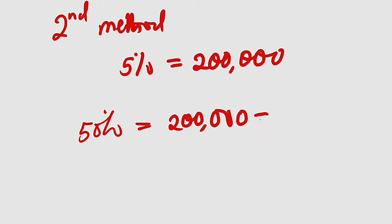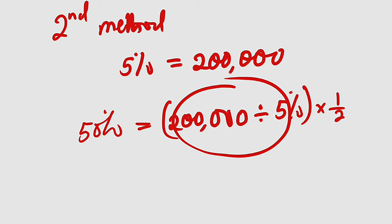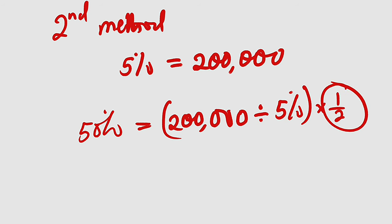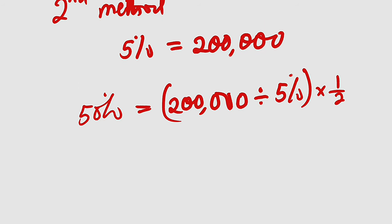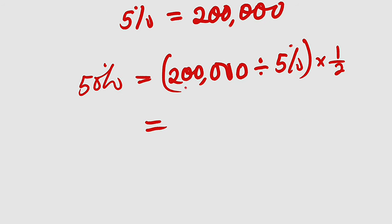Divided by this which is five percent, then we need to multiply this by half or divide by two, all the same, because this will give us 100 percent. Then this is half of 100 which is 50 percent.